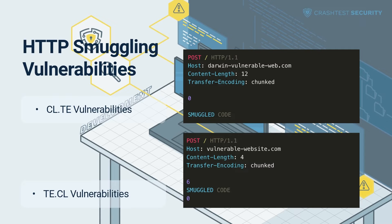In a TE.CL attack, the frontend server uses the Transfer-Encoding header while the backend relies on the Content-Length header. The hacker can then perform a request smuggling attack using malicious code similar to the code shown in the video. The frontend treats the message body as using chunked encoding and processes the first chunk size as six bytes long, until the line after the smuggled code. The backend server then receives and interprets the request as four bytes long, up to the start of the line after six. The remaining bytes starting with the smuggled code are not processed, so the server treats them as the start of the next incoming HTTP request.